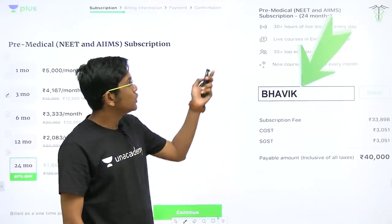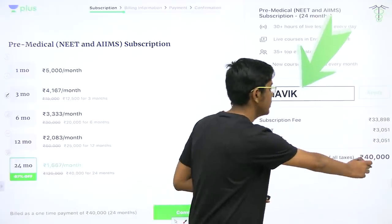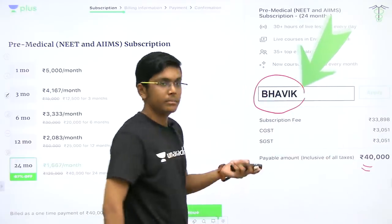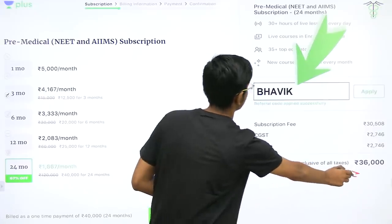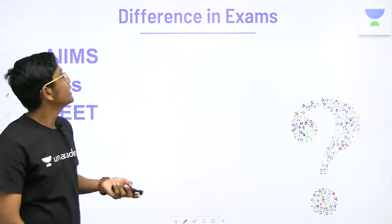Whereas the two year subscription costs 40,000. But again, you can use the code Bhavik and get a 10% discount to get it for 36,000. Now moving on to the topic.